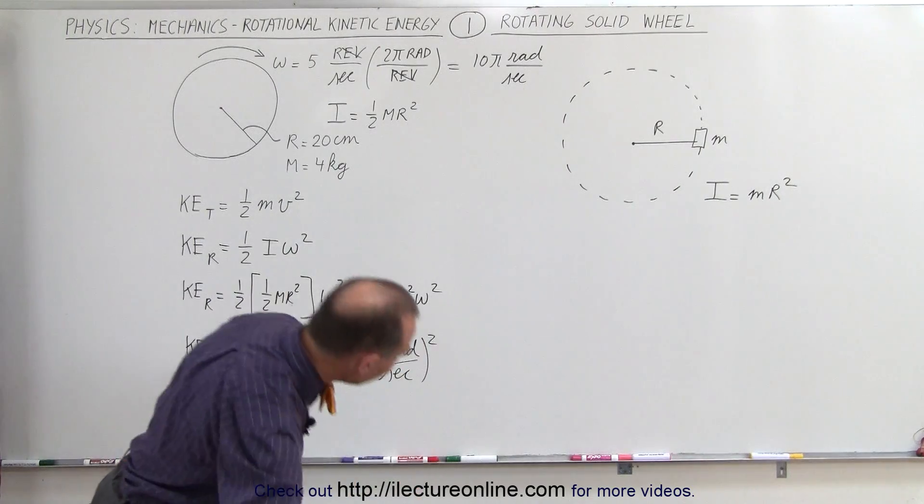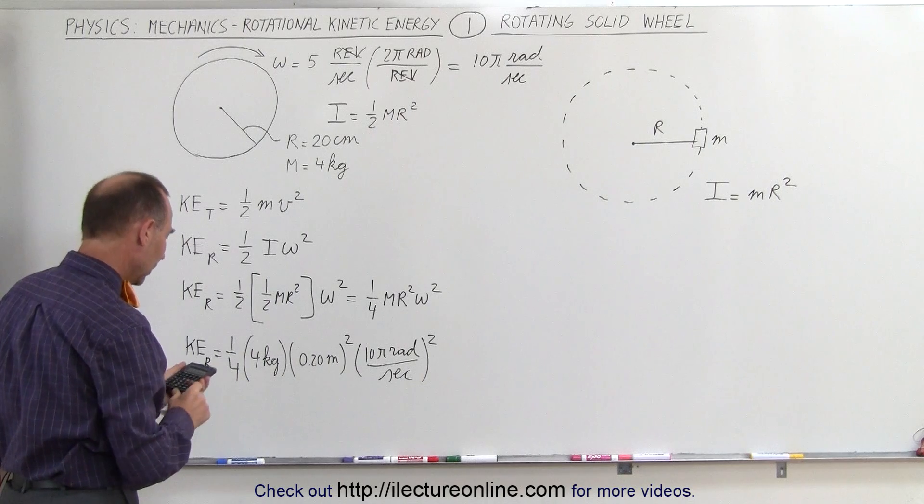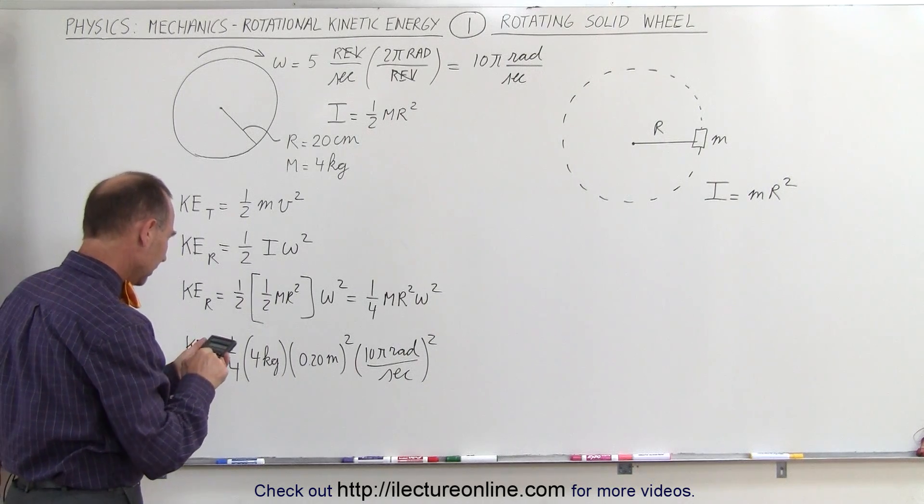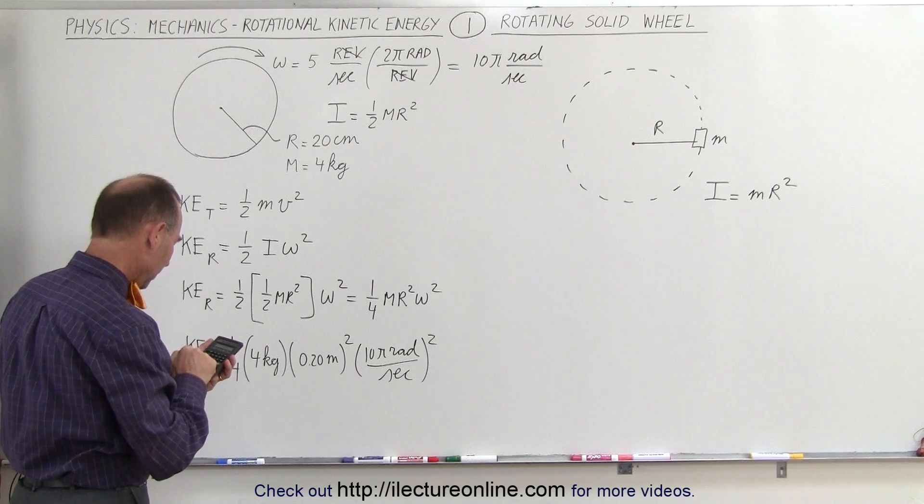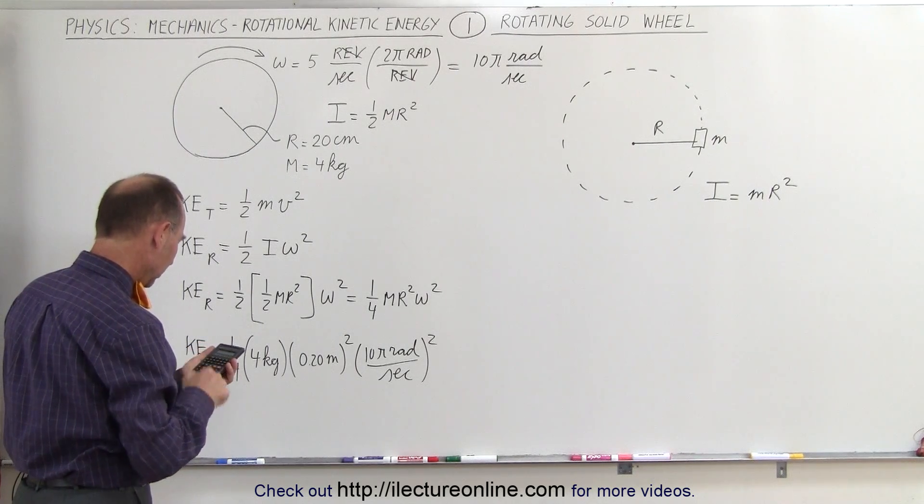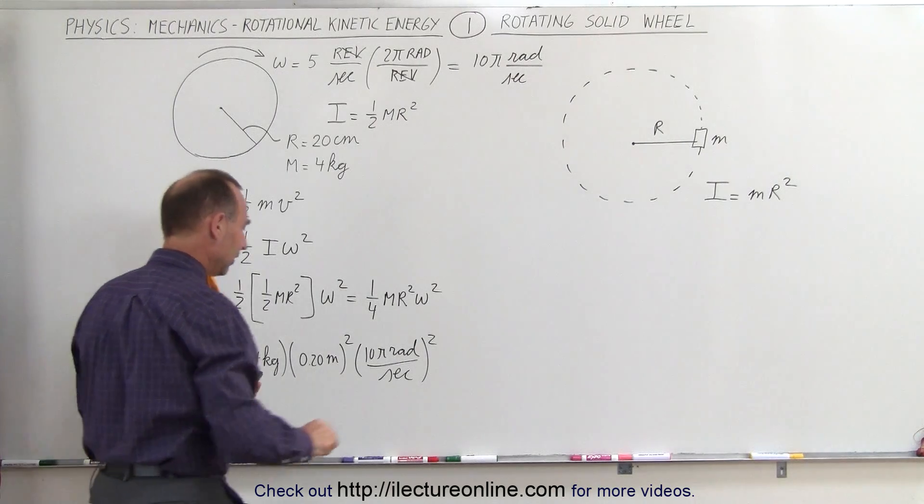Now with a calculator, we can figure out the answer. So obviously ¼ times 4 is 1, 0.2 squared times 100 for 10 squared times π² equals, and the answer is 39.5.